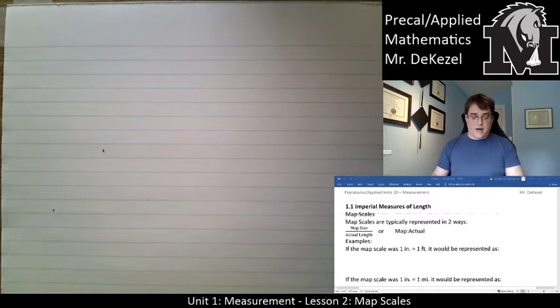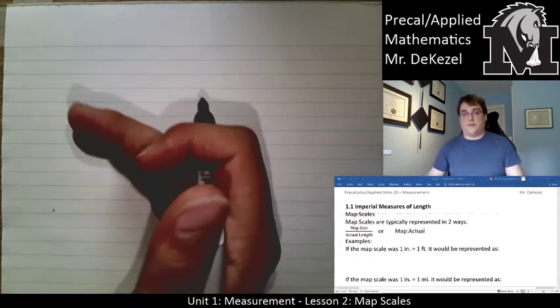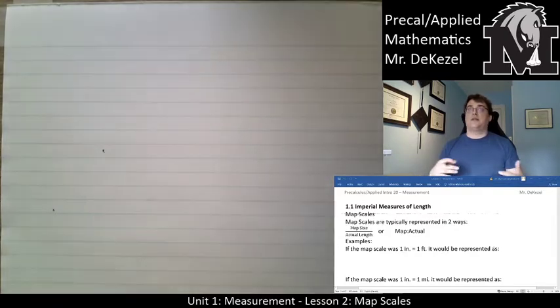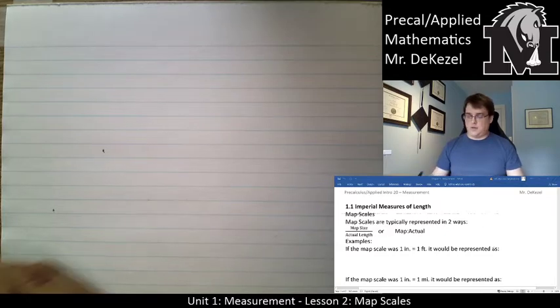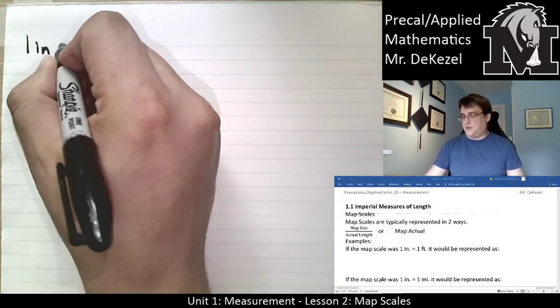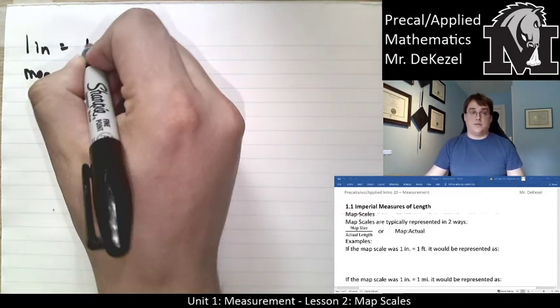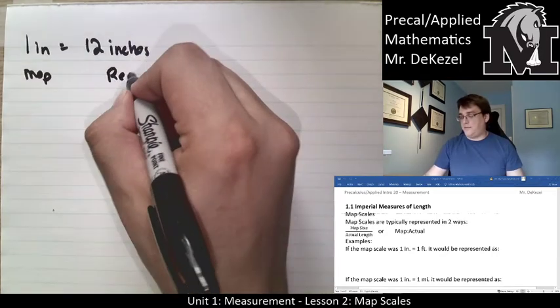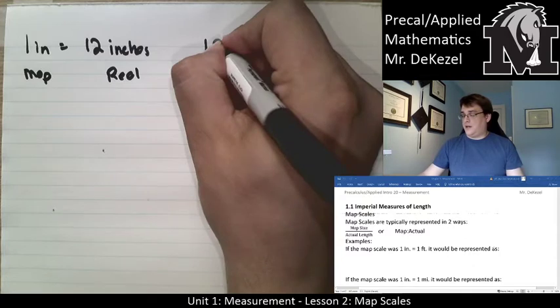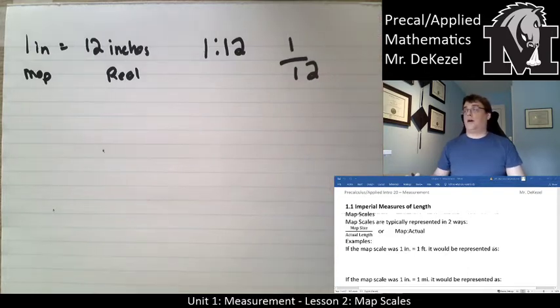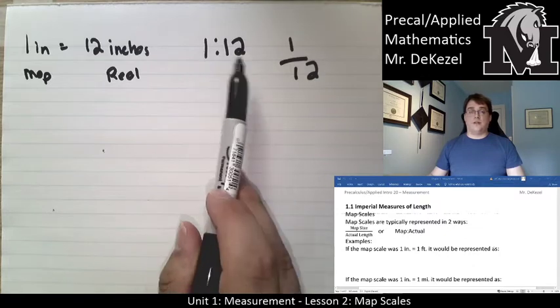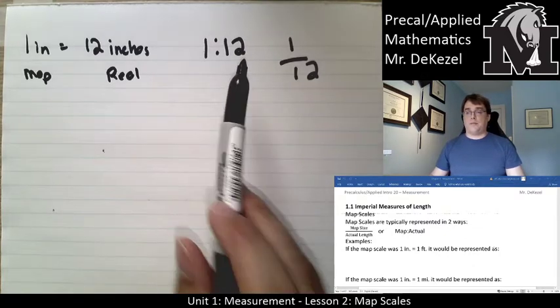For example, if the map scale was one inch equals one foot, it would be represented in a couple of different ways. We always want to represent it in the same units. One inch on the map, one foot in real life is hard to work with. We want them in the same unit, so we know that one inch on the map is equal to 12 inches in real life. We would represent that as 1 to 12 or 1 over 12, as shown above or in your booklet.